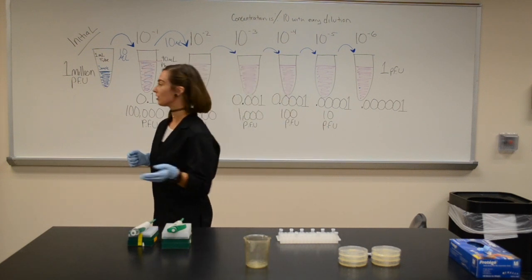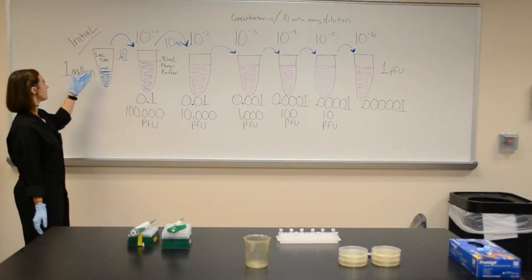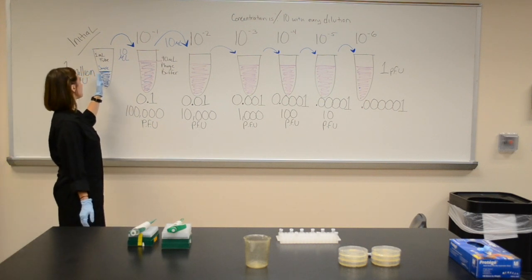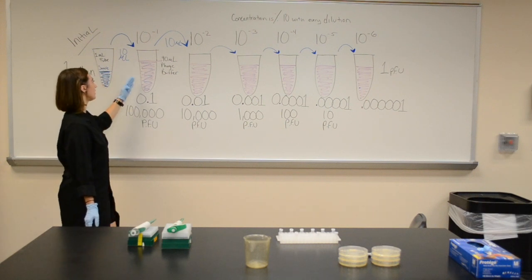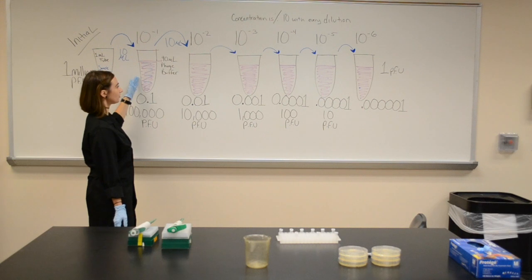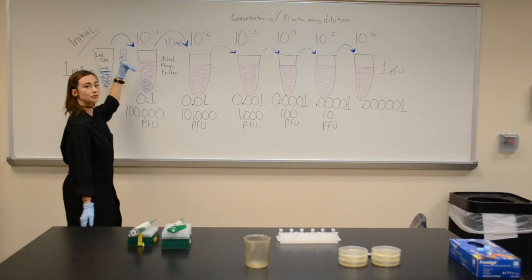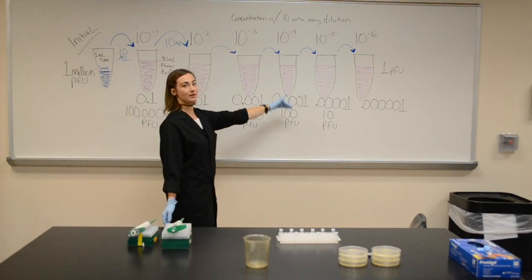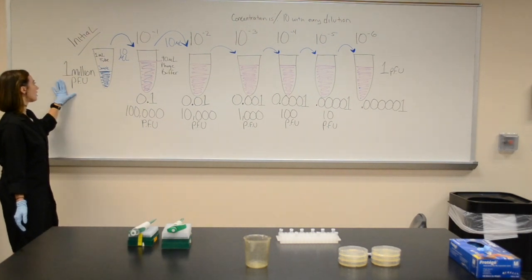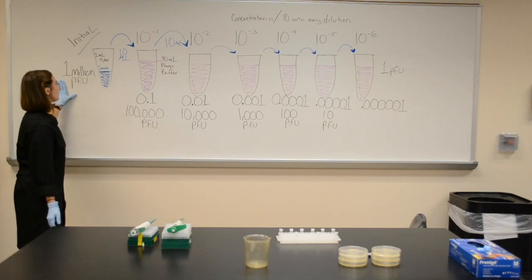For serial dilutions, we're going to take our initial microfuge tube which is full of our sample, and we're going to take 10 microliters of our sample and move it into the next tube that has 90 microliters of phage buffer. What we're doing essentially is every time we are moving 10 microliters over, we're dividing our concentration by 10.